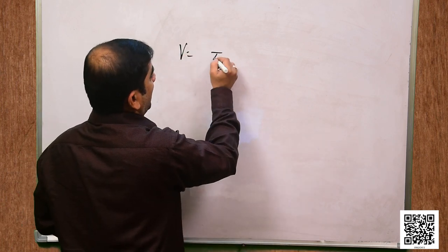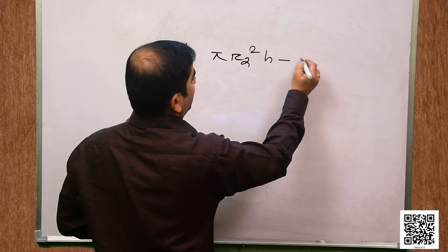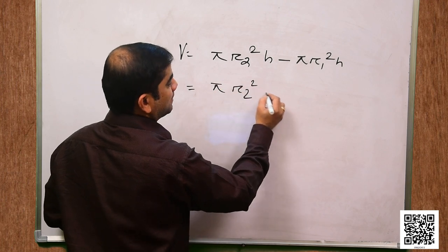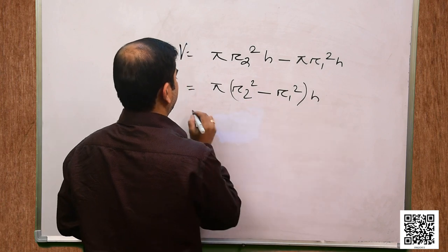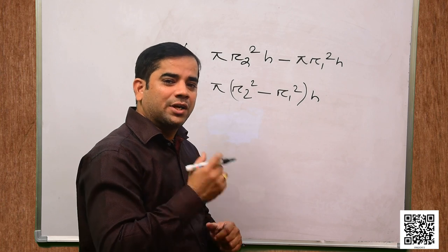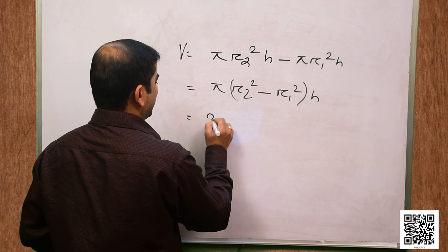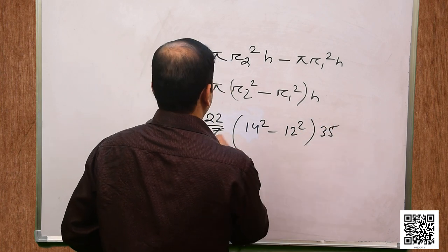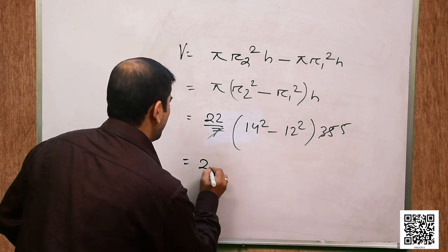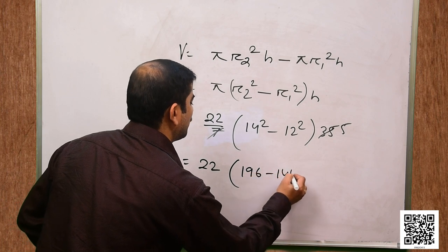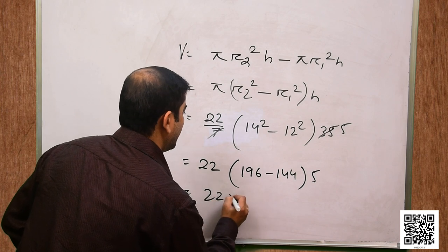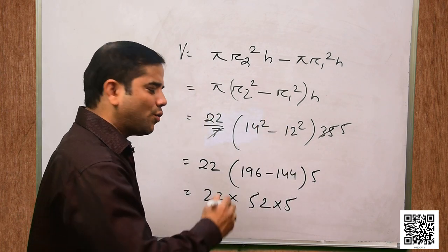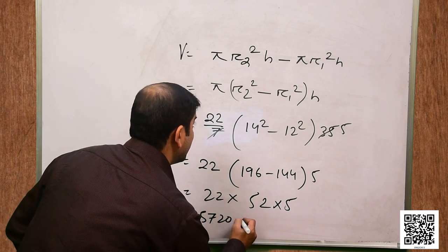Volume = πR2²h − πR1²h. R2 is the outer radius = 14 cm. So it is (22/7) × (14² − 12²) × 35. Seven fives are 35, so this equals 22 × (196 − 144) × 5 = 22 × 52 × 5 = 5720 centimeter cube.